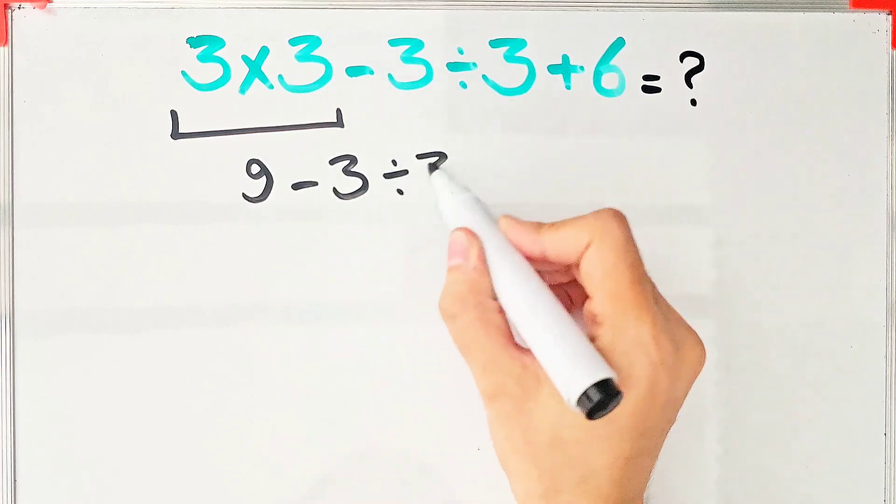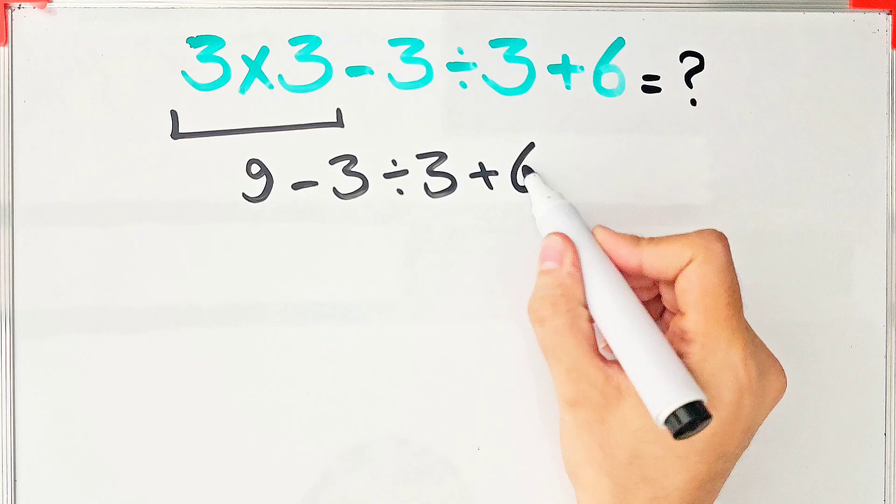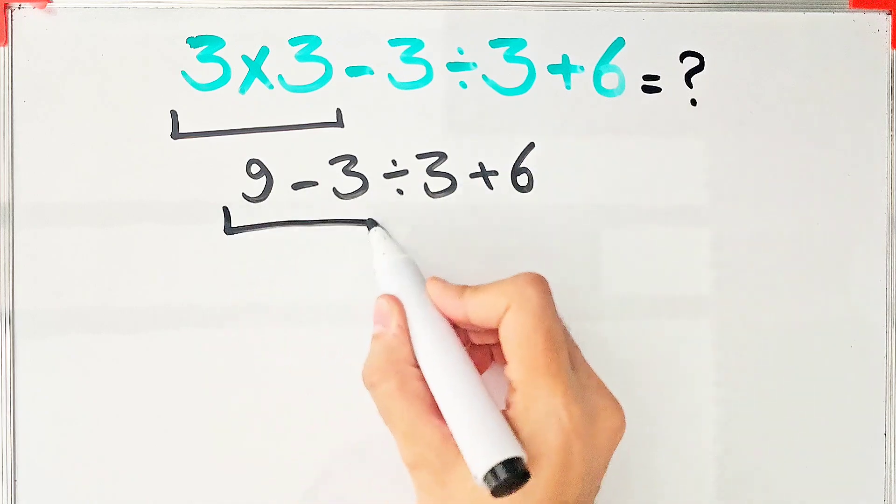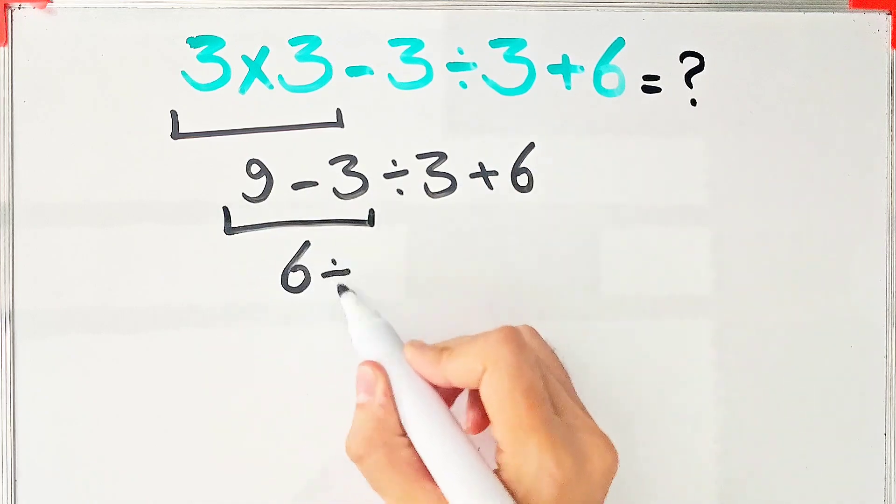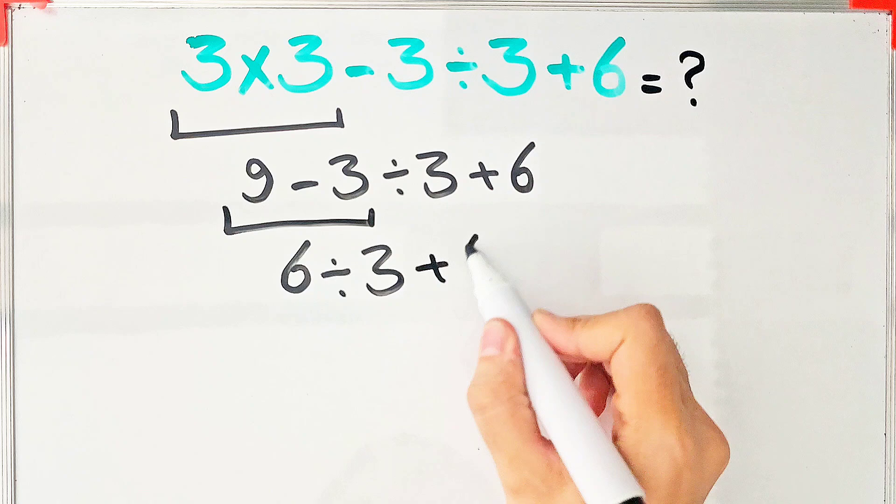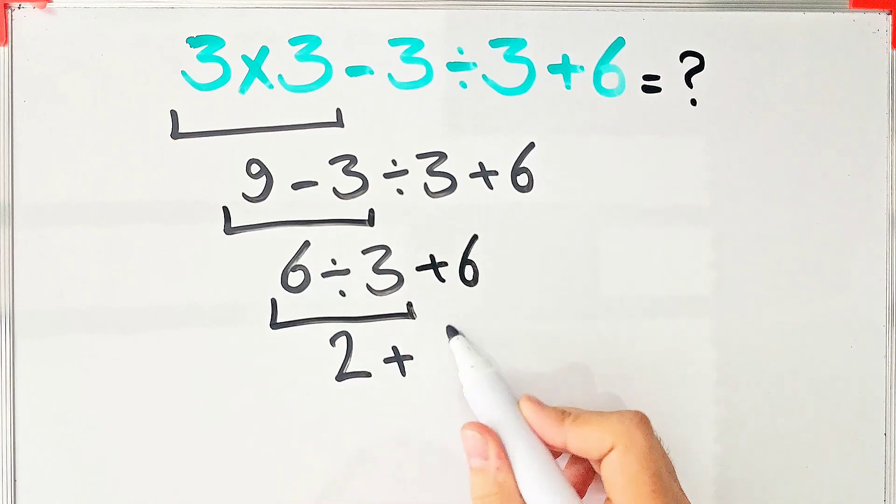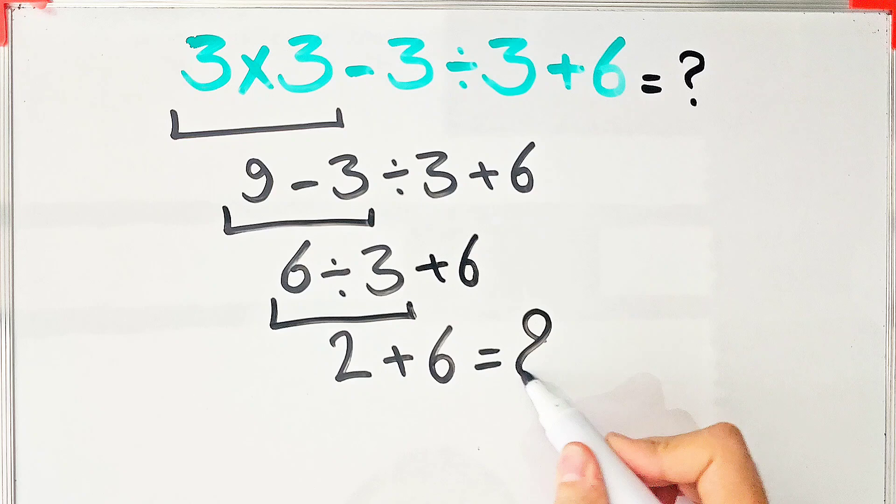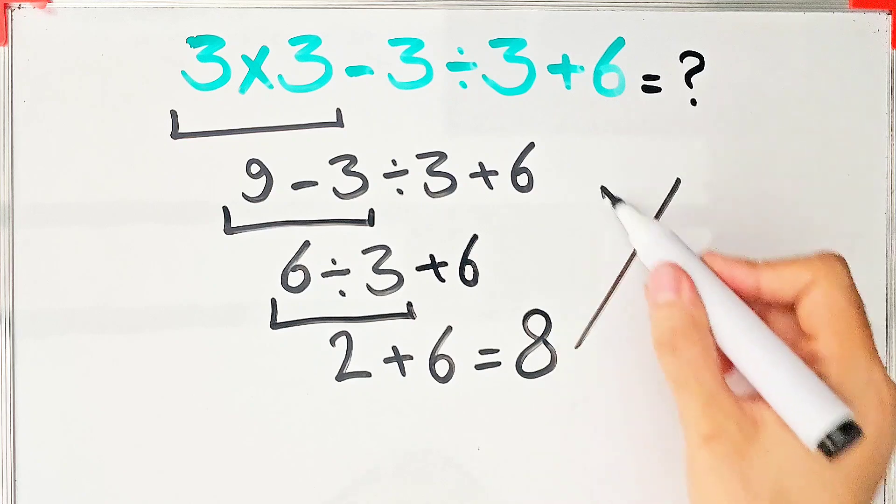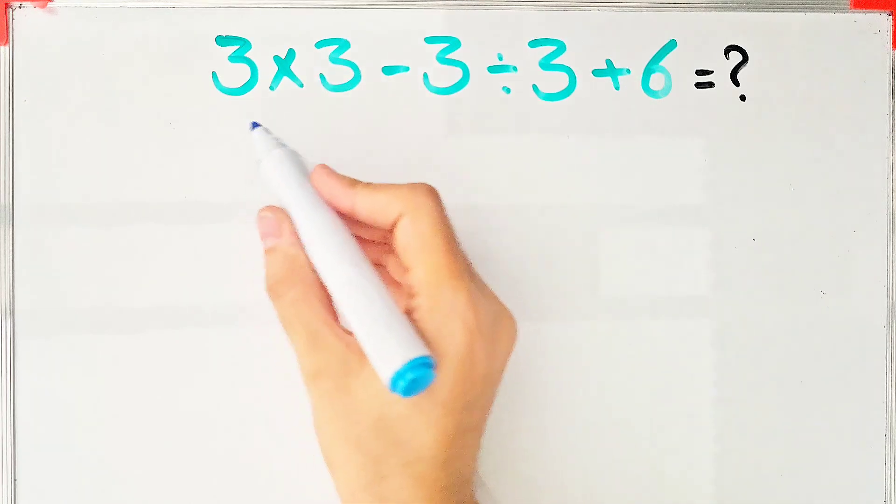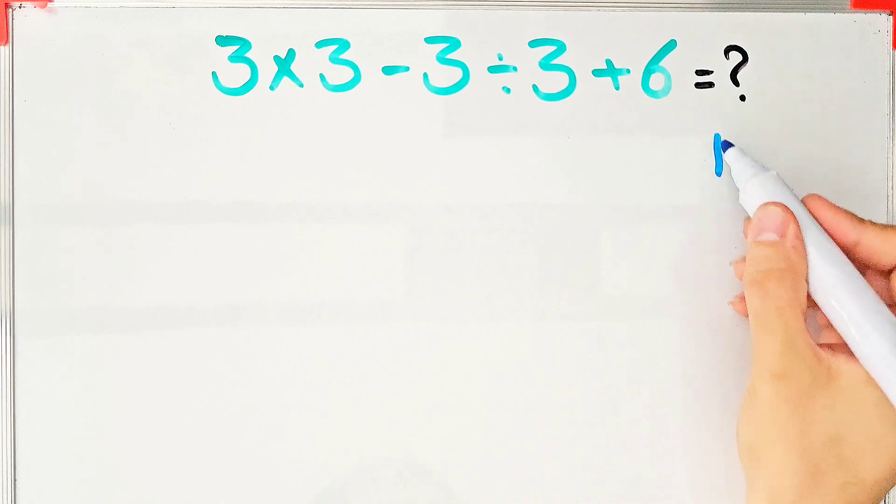this question like this: 9-3÷3+6. 9-3=6, 6÷3+6. 6÷3=2, and 2+6=8. They say the final answer of this question equals 8, but it's wrong. Let's solve it step by step together. To solve this...